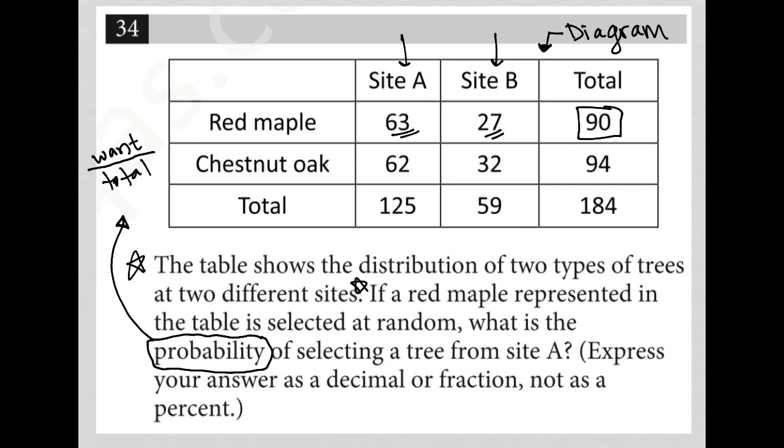So what do we want? We want a red maple from site A. There are 63 of those, so my numerator would be 63. What am I choosing from? Well, I'm choosing from all the red maples - there are 90 total red maples. So that's what I put here.